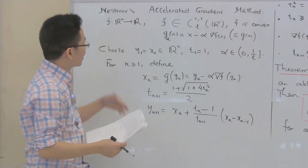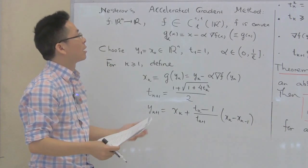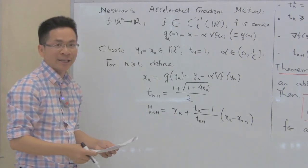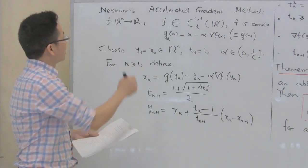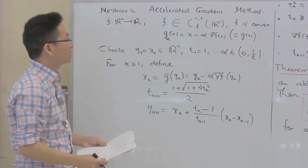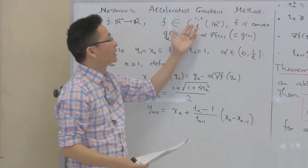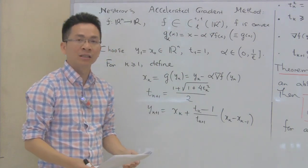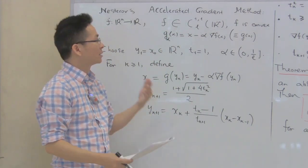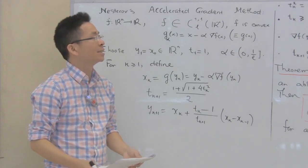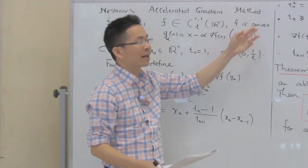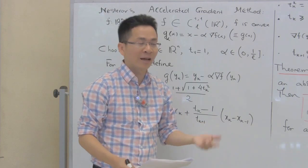In today's lecture, I'm going to focus on the convergence rate of the Nesterov accelerated gradient method. Let f be a function defined on R^n, and we suppose that it is a C^{1,1} function — that means f is a C^1 function and the gradient of f is Lipschitz continuous with Lipschitz constant L. We also assume that f is a convex function.